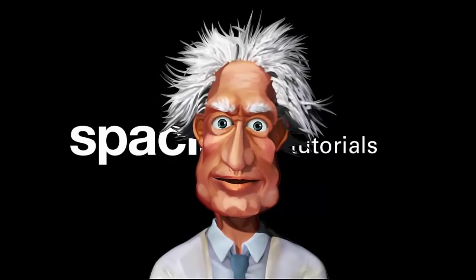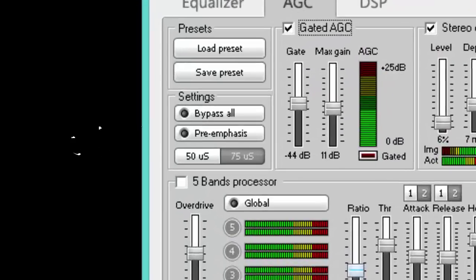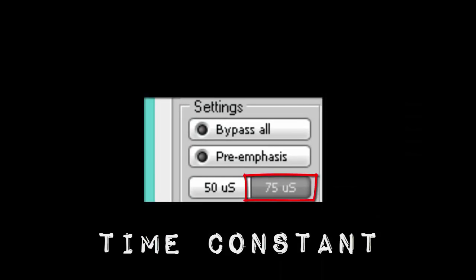The time constant should be selected according to the rules of your country. North America uses 75 microseconds pre-emphasis, whilst Europe and Australia use 50 microseconds.